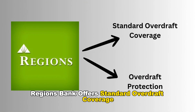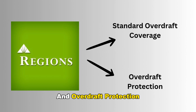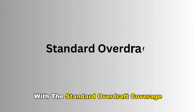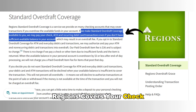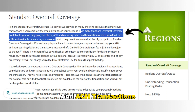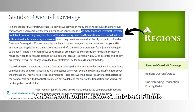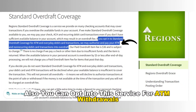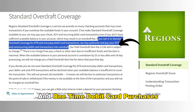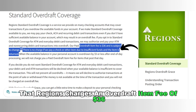Regions Bank offers standard overdraft coverage and overdraft protection. With the standard overdraft coverage, Regions covers your check, recurring debit card, and ACH transactions when you don't have sufficient funds. You can also opt into this service for ATM withdrawals and one-time debit card purchases. It's worth noting, however, that Regions charges an overdraft item fee of $36.